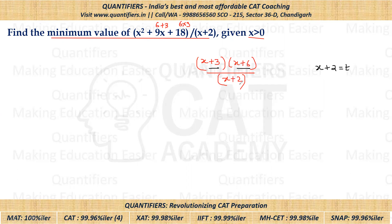Now if x+2 is equal to T, the denominator is T. So x+3 value is T+1. And similarly, x+6 is 4 more than the denominator. So x+6 is T+4, whole divided by T.